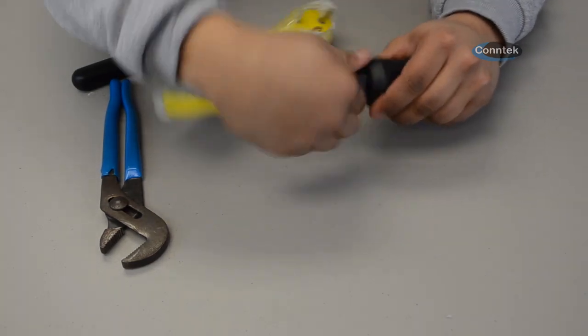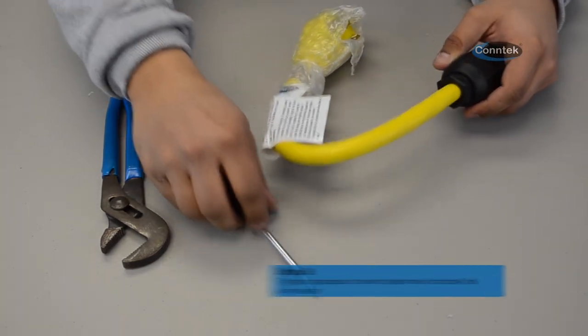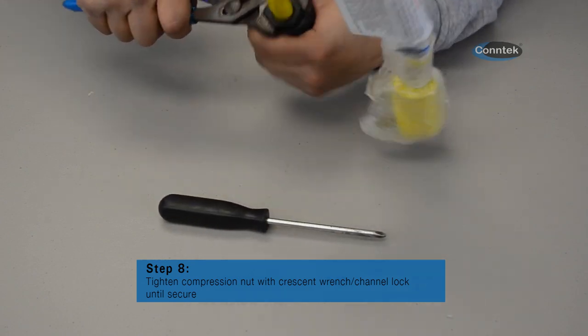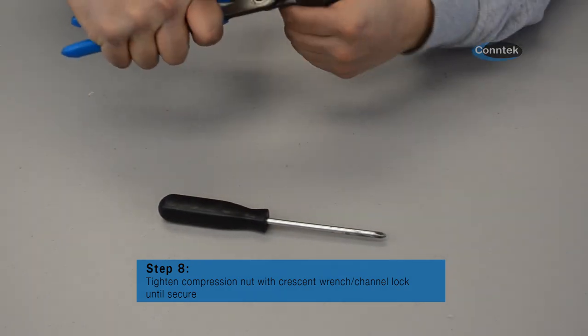You have now successfully wired a locking 3-prong 30-amp connector. For further information and products, please visit our website at www.conteck.com. And thank you for watching.